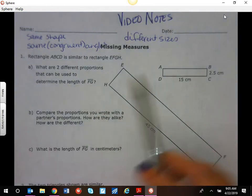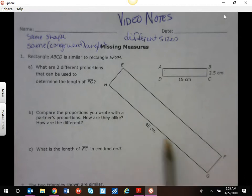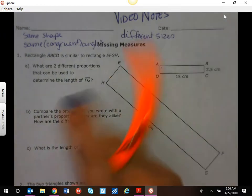It tells us ABCD is similar to EFGH. What are two different proportions we can use to find FG? When we did these originally we talked about using highlighters to figure out what sides are marked and you can look at your letters.